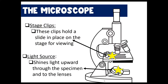On top of the stage, we have stage clips, which help hold the specimen in place on the stage while we're viewing it — it secures whatever we're trying to look at. The light source is at the bottom of the microscope. It shines upward through the diaphragm toward the stage so that the light can move through and magnify through the objective lenses and the eyepiece.